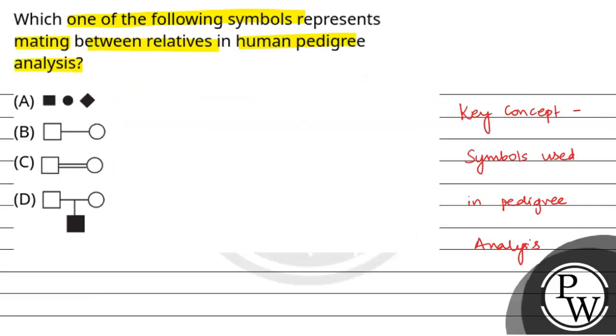This symbol shows mating between the relatives in the human pedigree. Mating between the relatives is consanguineous mating.